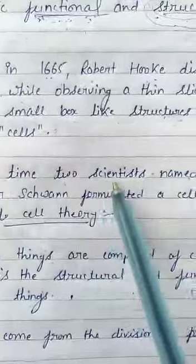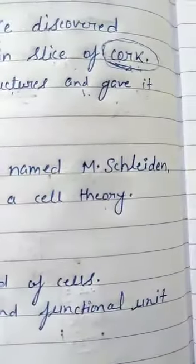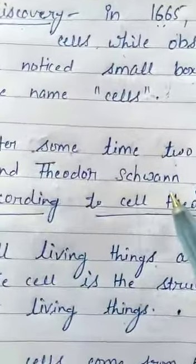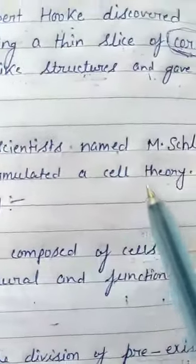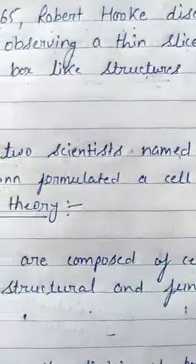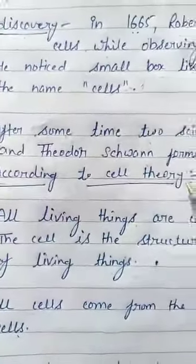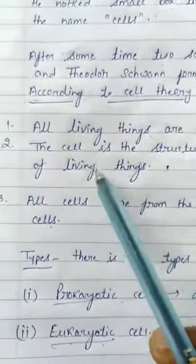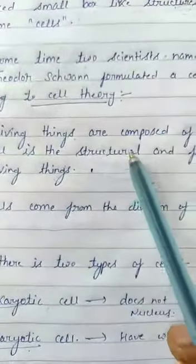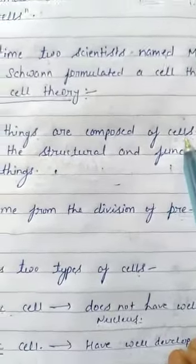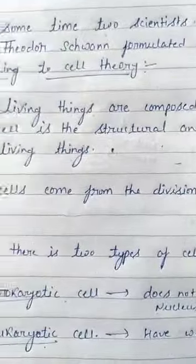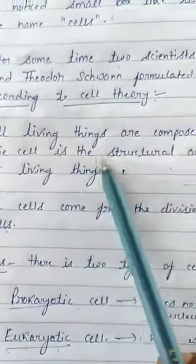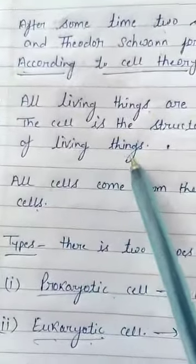After some time, there are two scientists named M. Schleiden and Theodore Schwann. Schleiden and Schwann formulated a cell theory and gave a cell theory. According to cell theory: number one, all living things are composed of cells — all living things are made up of cells. And the cell is the structural and functional unit of the living things.